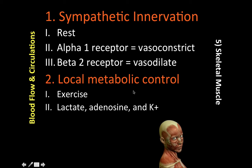The demand for O2 in skeletal muscles varies with metabolic activity levels, and blood flow is regulated to meet that demand. During exercise, when demand is high, local metabolic mechanisms are dominant — the local vasodilator substances including lactate, adenosine, and potassium, which we talked about in a previous video.